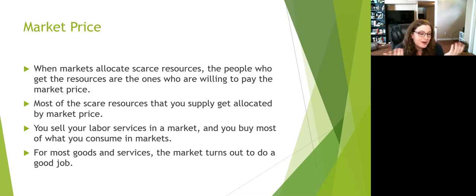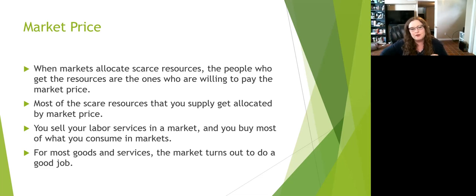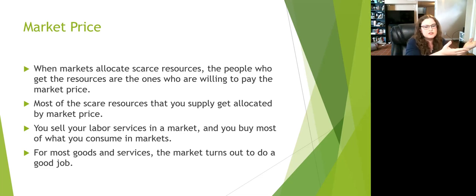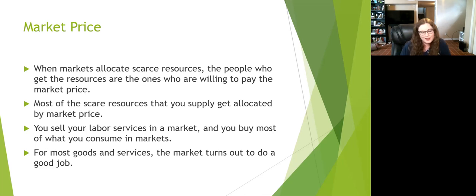Most scarce resources are allocated by market price — the store, the bookstore, the tea shop. You sell your labor services in the market, you get a wage, and with that wage you buy most of what you consume, which supports other people's wages for their labor services. The whole system is interconnected. For most goods and services — probably about 90% — the market does a pretty good job of allocating them.